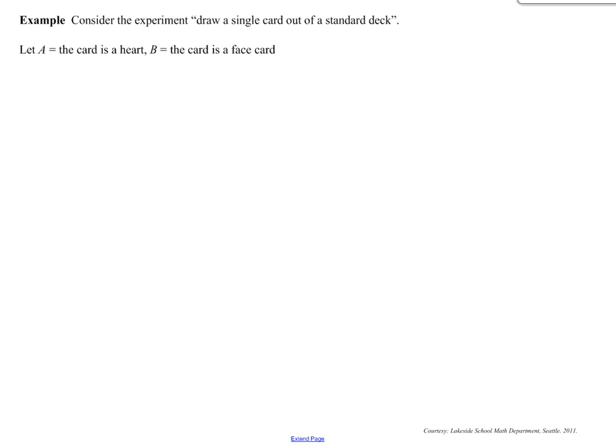Okay. So, now it's a little bit more complicated. We're actually going to use numbers to figure out the probability. So, for example, consider the experiment draw a single card out of a standard deck. All right. So, we're going to let A equal the card is a heart, and B equal the card is a face card. Okay. So, once again, I would recommend drawing a Venn diagram. Okay. So, we are going to go ahead and do that.